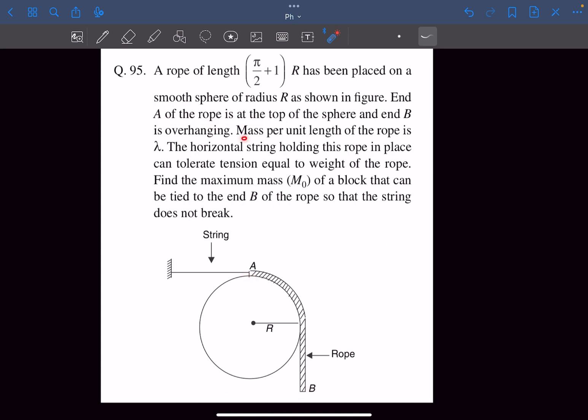The mass per unit length is given. The horizontal string holding this rope in place can tolerate tension equal to the weight of the rope. Find the maximum mass M₀ of a block that can be tied to end B so that the string does not break. Try this problem out for a few minutes and then come back for the solution.